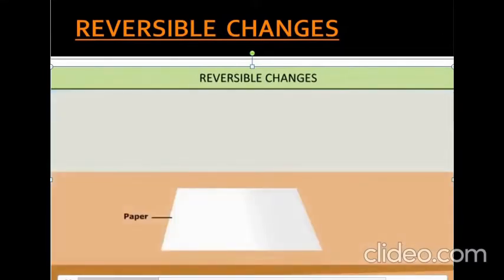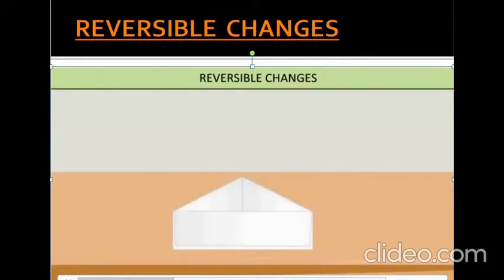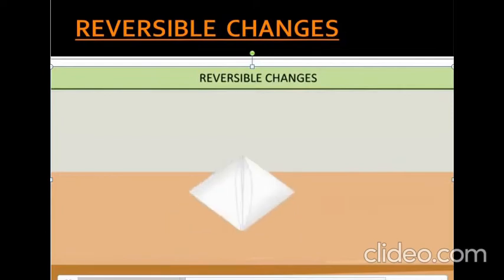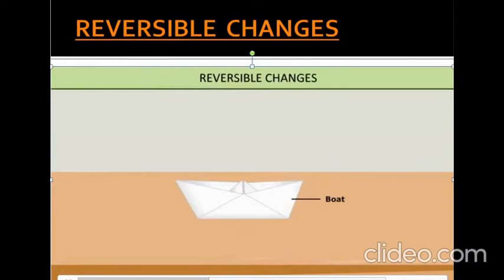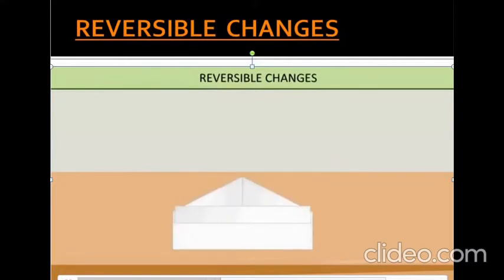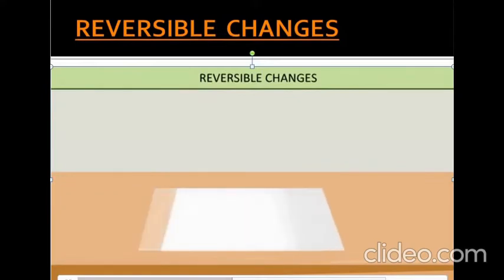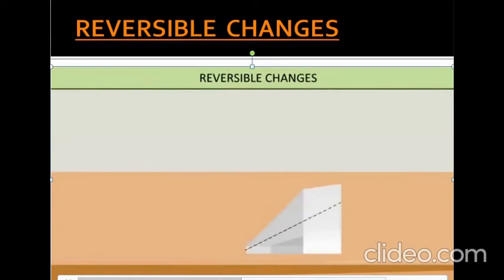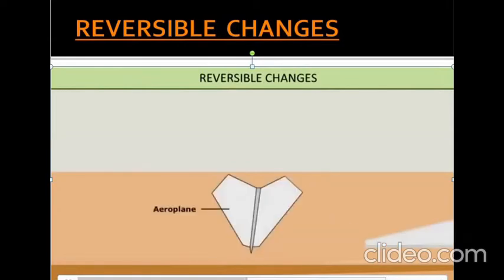Make a boat out of a sheet of notepaper. What you have to do is change the shape of the sheet of paper from a simple rectangle into a boat-like shape. Now you want to make something else from the same sheet of paper. It is simple — just unfold the paper and make an aeroplane with it. In this way, you can change the boat back into a sheet of paper and use it to make an aeroplane.